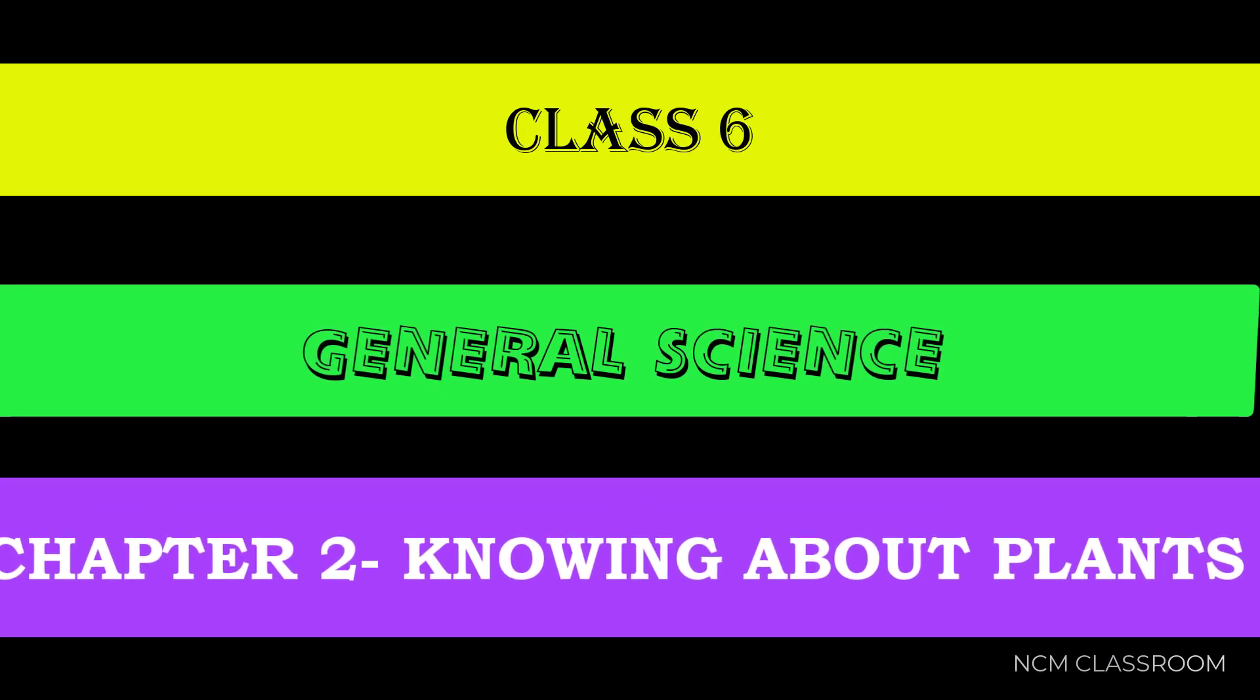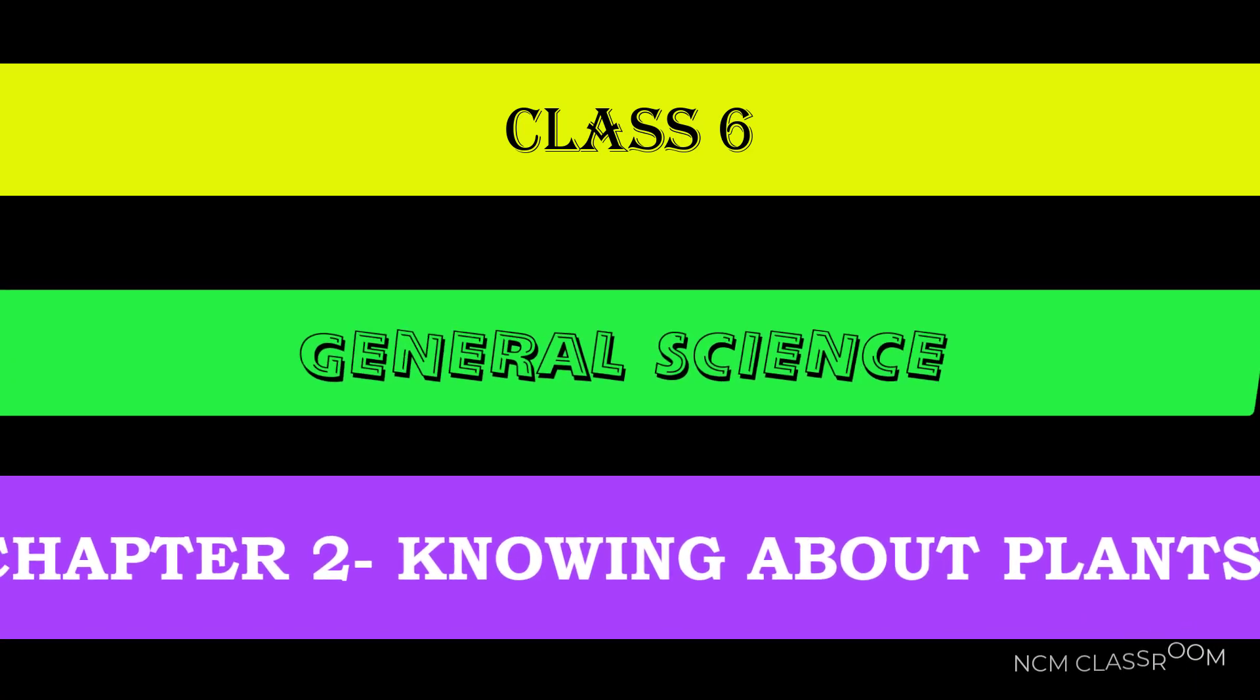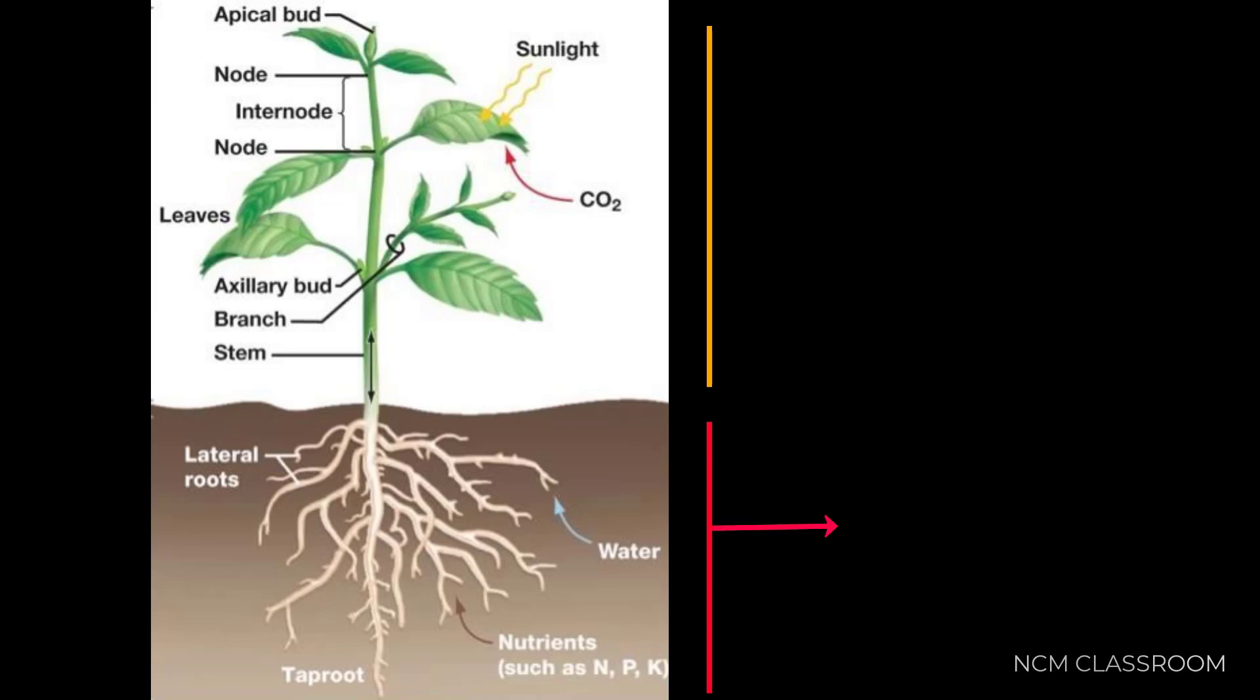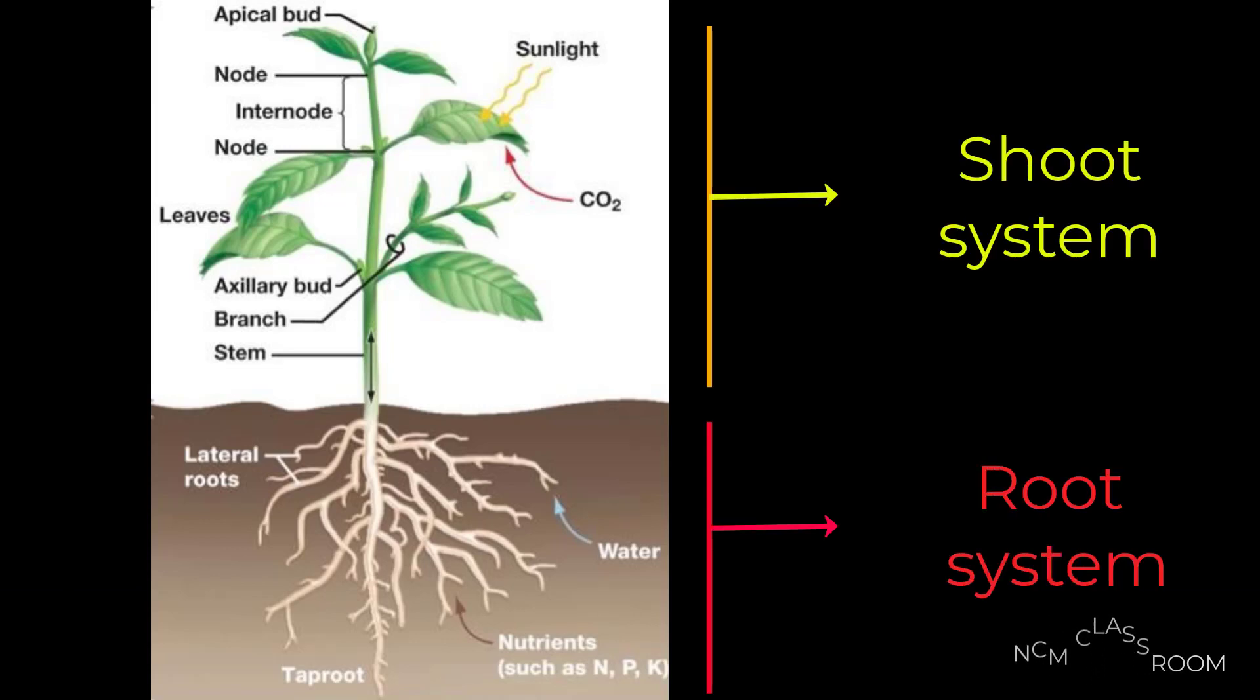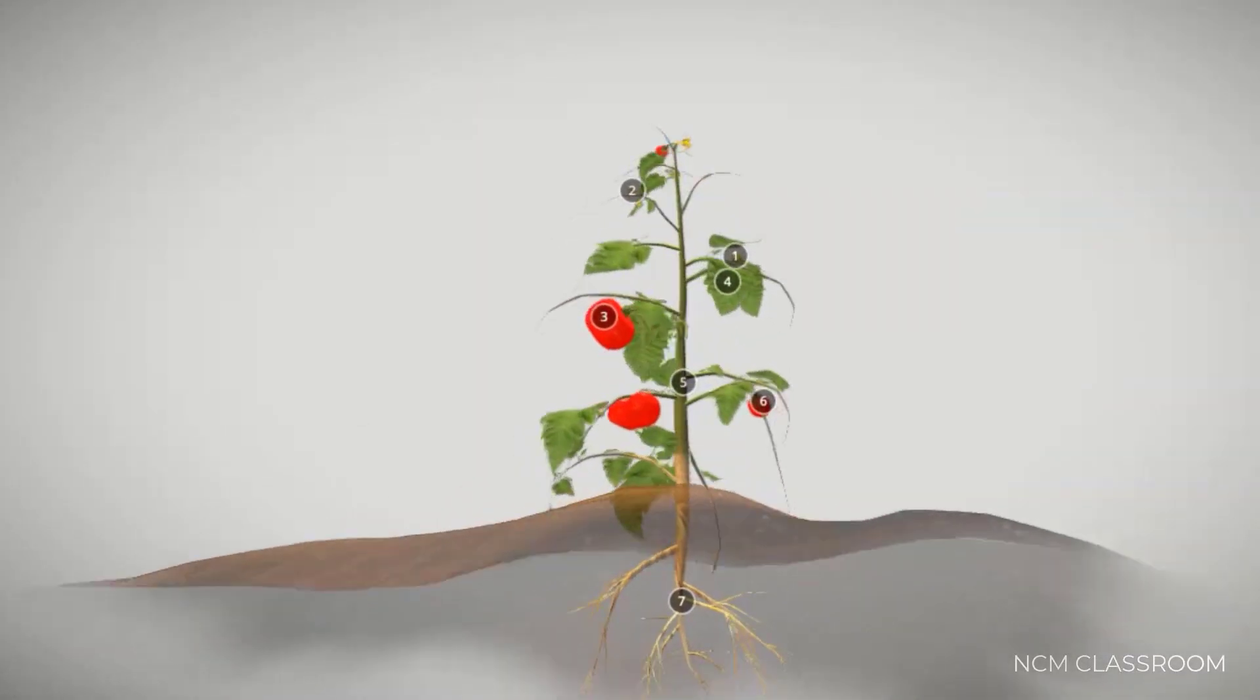Hi children, in this video we will learn class 6 general science chapter 2, knowing about plants. Now let us see: a plant shows two systems - one is root system that grows into soil, another system is shoot system.